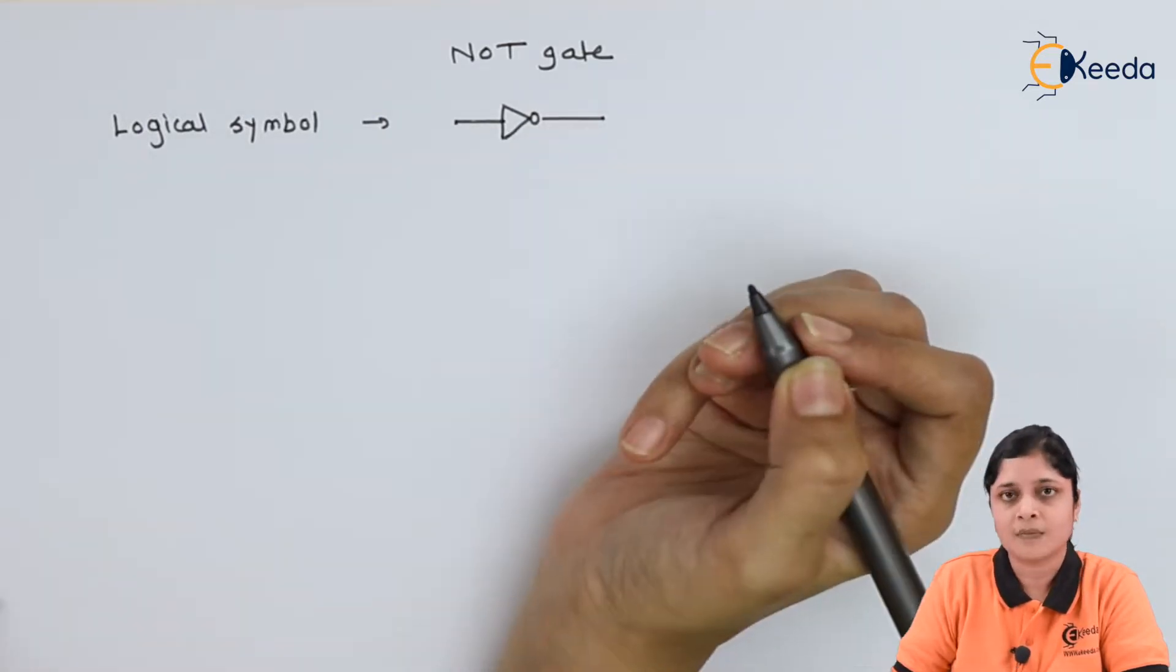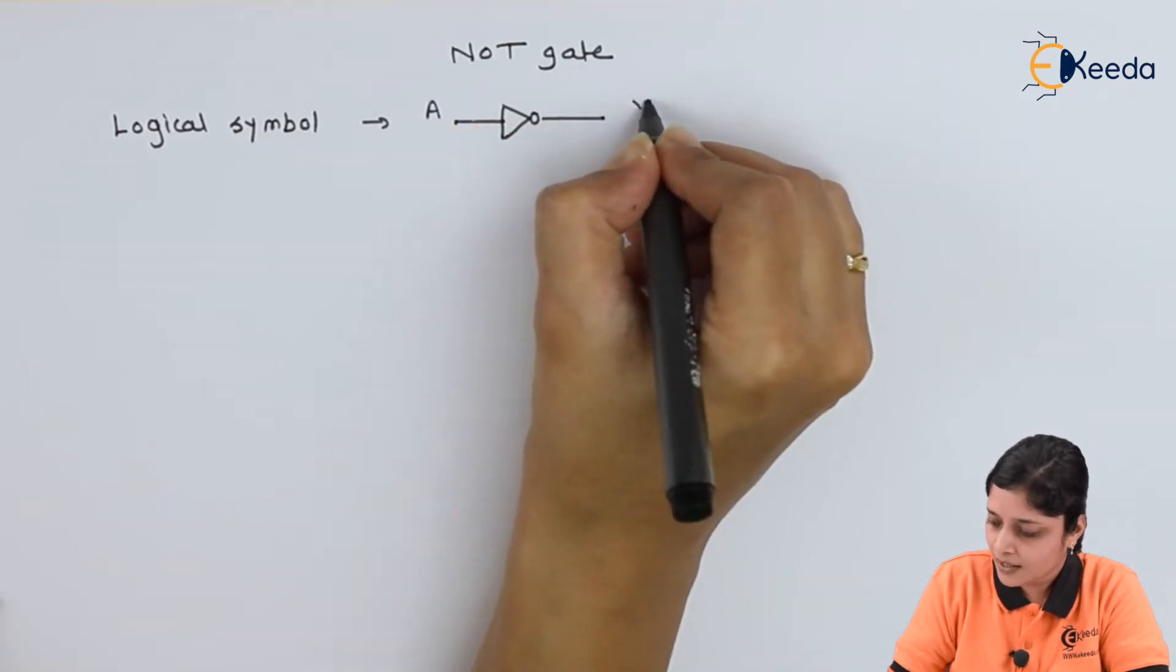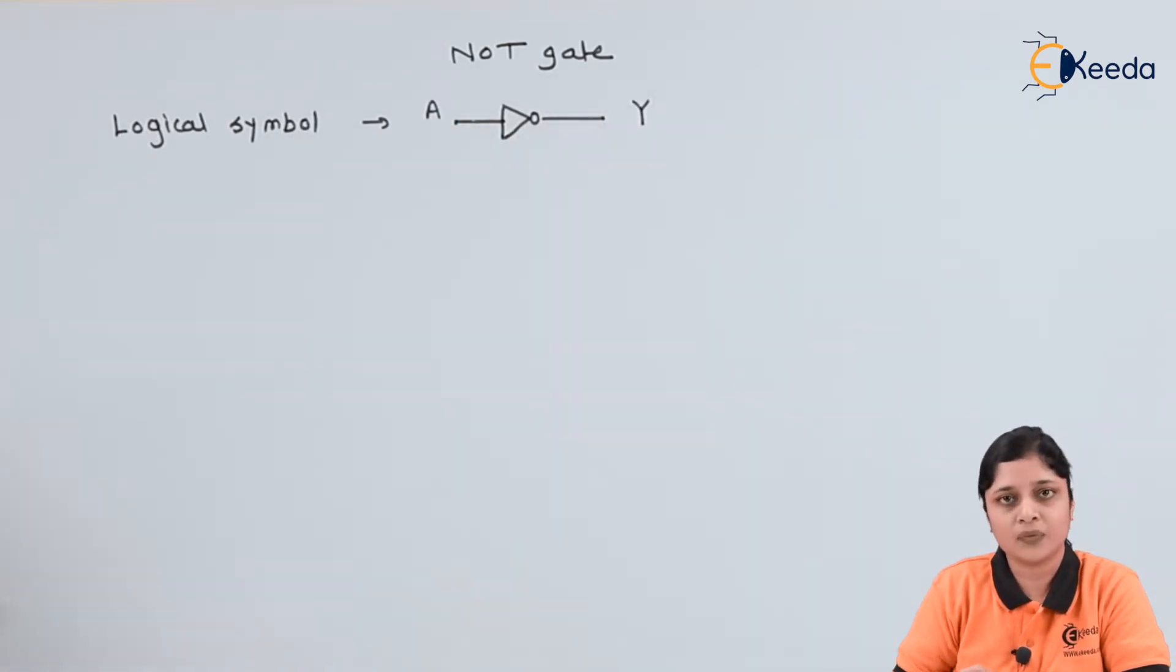Here only one input is there, and at the output you will get the inverted one, that is complement of the input.